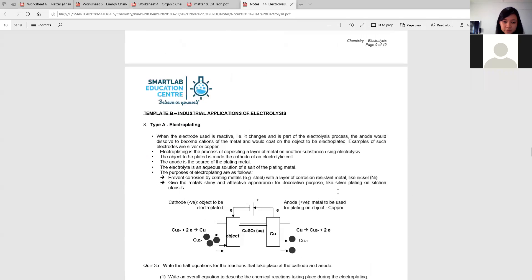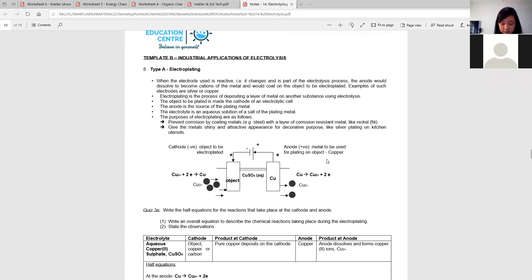So we look at the bottom, electroplating. This one is a bit more special because you notice now the electrode is reactive. Meaning you see this electrode here, they are metals, they are not your graphite, not your carbon. So meaning there is a possibility that instead of attracting the ions and discharging the ion, the metal is the one that will go through the oxidation or even the reduction first.